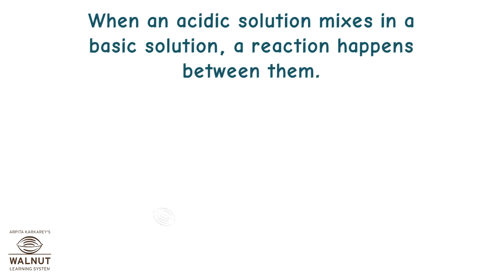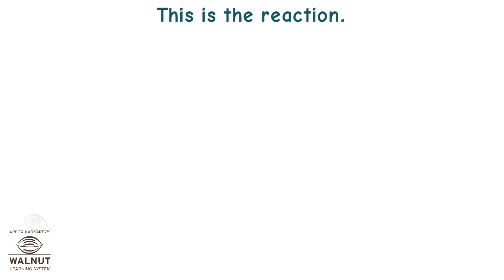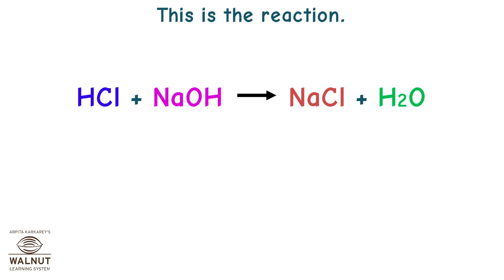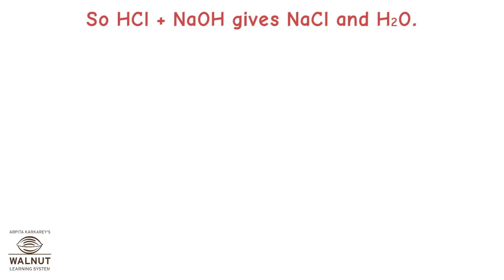When an acidic solution mixes with a basic solution, a reaction happens between them. This results in the formation of a new substance called salt, along with water. HCl plus NaOH gives NaCl plus H₂O. Hydrochloric acid is HCl and sodium hydroxide is NaOH, so HCl plus NaOH gives NaCl and H₂O.